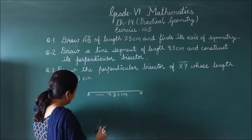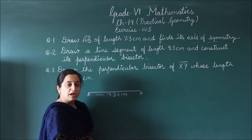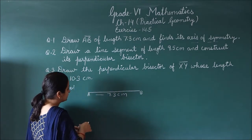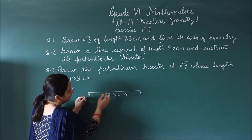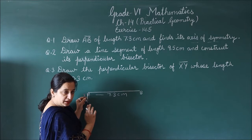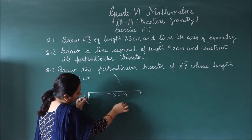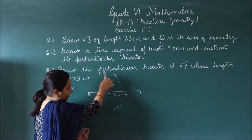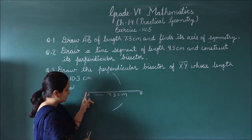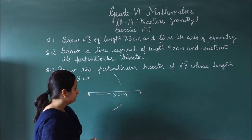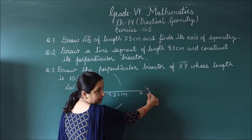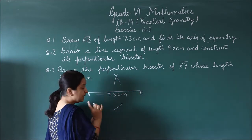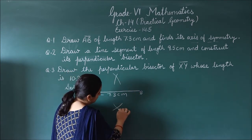Open the compass to more than half the length. Keep the needle at point A and draw one arc above and one arc below. Then, keeping the same radius, place the needle at point B and draw one arc above and one arc below.